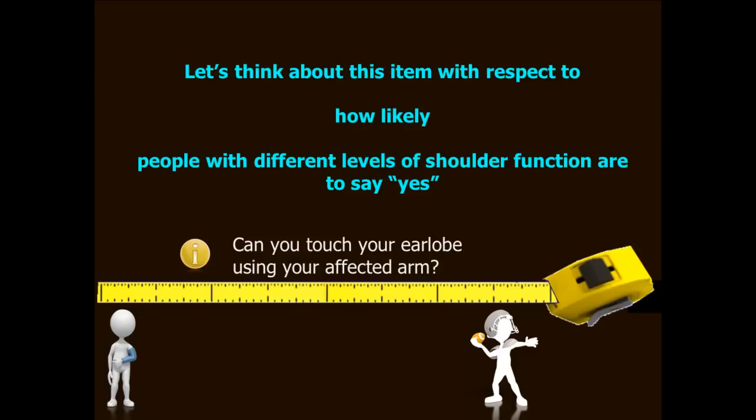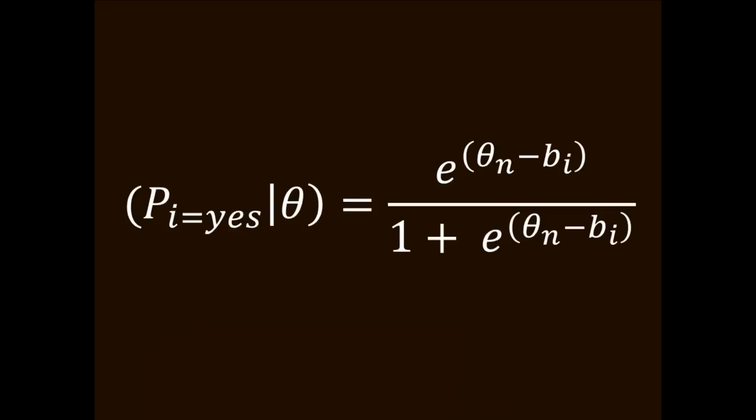I would like for you to think about this item in terms of how likely it is that people with different levels of shoulder function are to say yes, they can do that. This how likely part is IRT's probability question. Remember the formula I showed you that started out with P subscript I equals yes, and that stood for the probability that a person would say yes to item I. And also remember that that probability was conditioned on or depended on how much of the trait a person had, how much of theta.